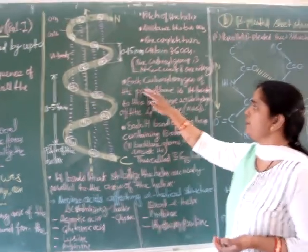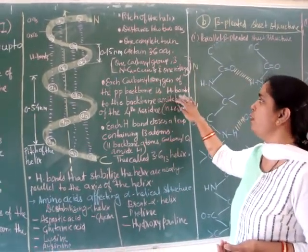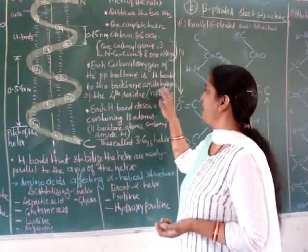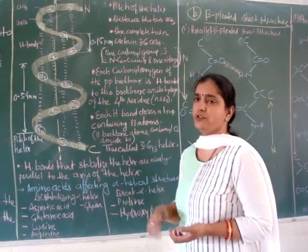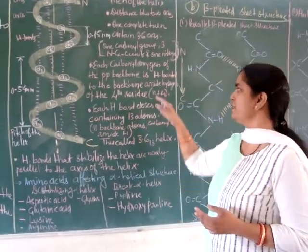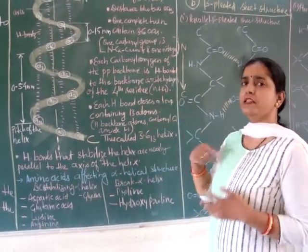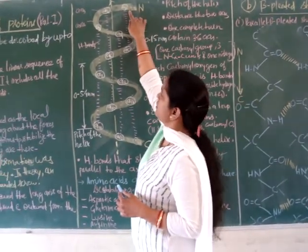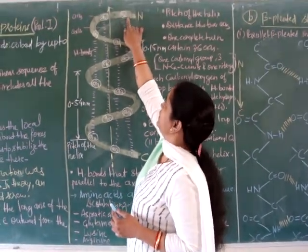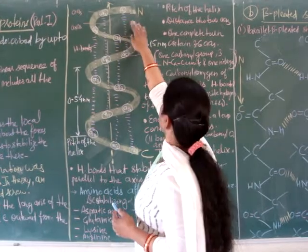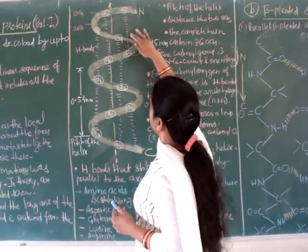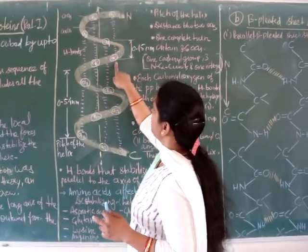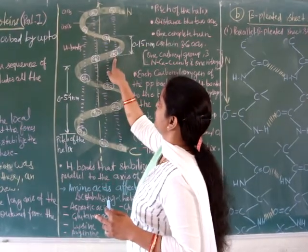Each carbonyl oxygen of the polypeptide backbone is hydrogen bonded to the backbone amide hydrogen of the fourth residue ahead — that is, the N+4 residue. For example, the carbonyl oxygen of amino acid 1 is hydrogen bonded to amino acid 5, the second to amino acid 6, and so on.